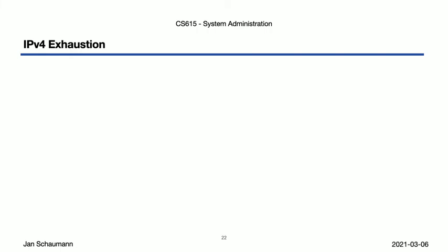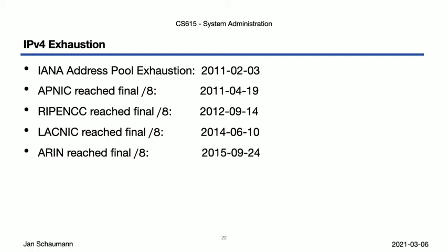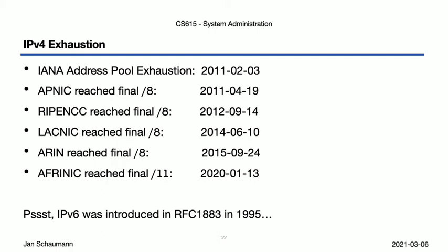So the 2 to the 32 addresses we started out with quickly began to be depleted. IANA exhausted its pool of unallocated slash-8 networks just about ten years ago, and the RIRs then followed quickly — APNIC in April 2011, RIPE in 2012, LACNIC in 2014, ARIN in 2015, and AFRINIC in January of last year — meaning we're officially out of IPv4 addresses. Which is why IPv6 was introduced way back in 1995, and why it's so disappointing that, ten years after IANA ran out of v4 addresses to allocate, we still have organizations and companies that do not support IPv6.